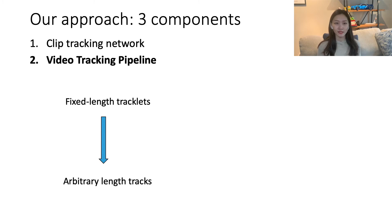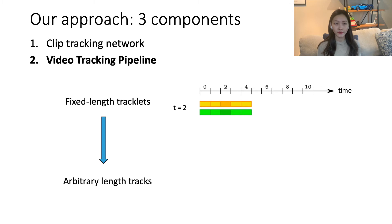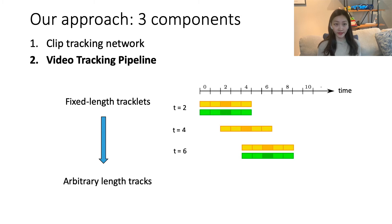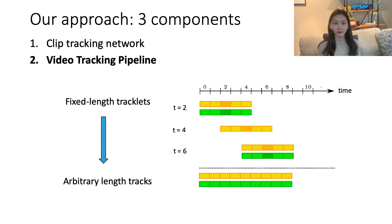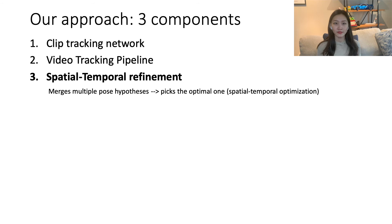For example, at time t equals 2, we have two persons detected — the yellow one and the green one. At time t equals 4, we only detect one person, the yellow one. At time t equals 6, yellow and green persons are redetected. Now, thanks to our propagation of person detections from keyframes to their neighboring frames, we're able to obtain joint predictions even for those frames with misdetections, like the green detection at time t equals 4. We run our Clip Tracking Network on overlapping clips and obtain multiple-pulse hypotheses of the same person in each frame.